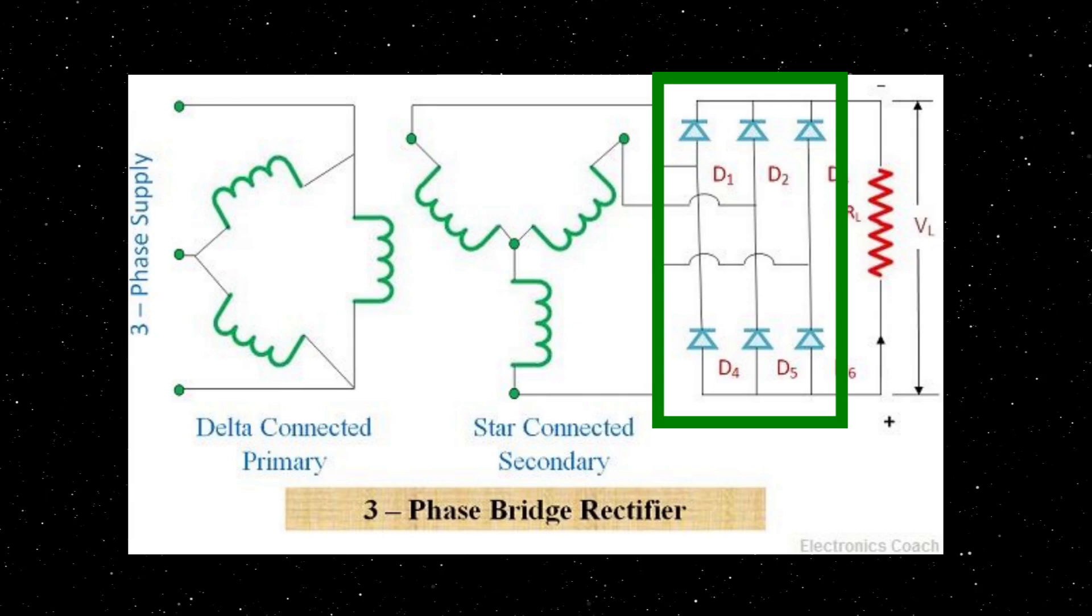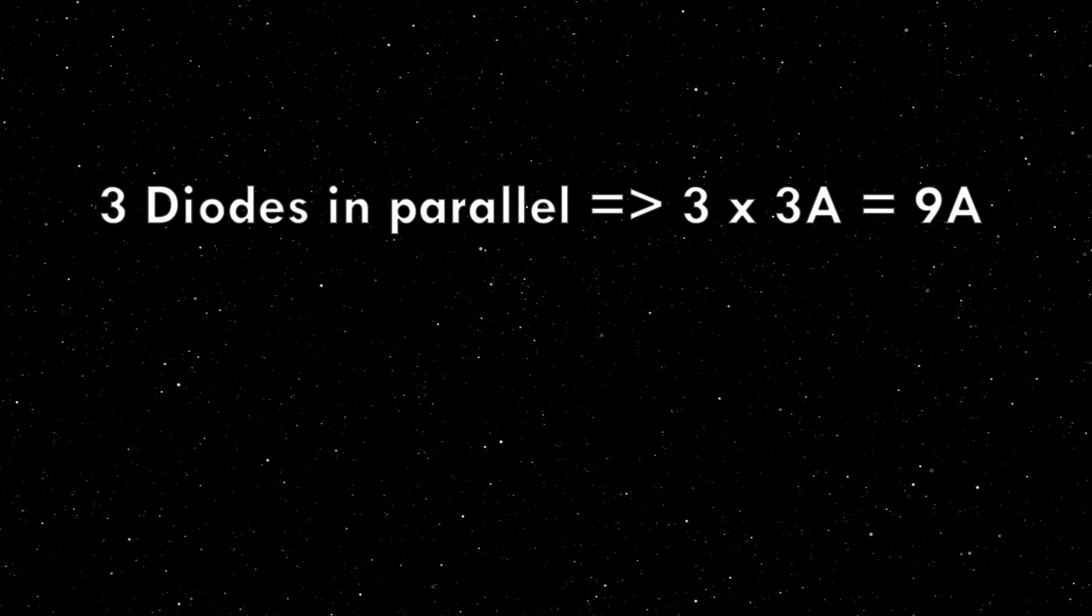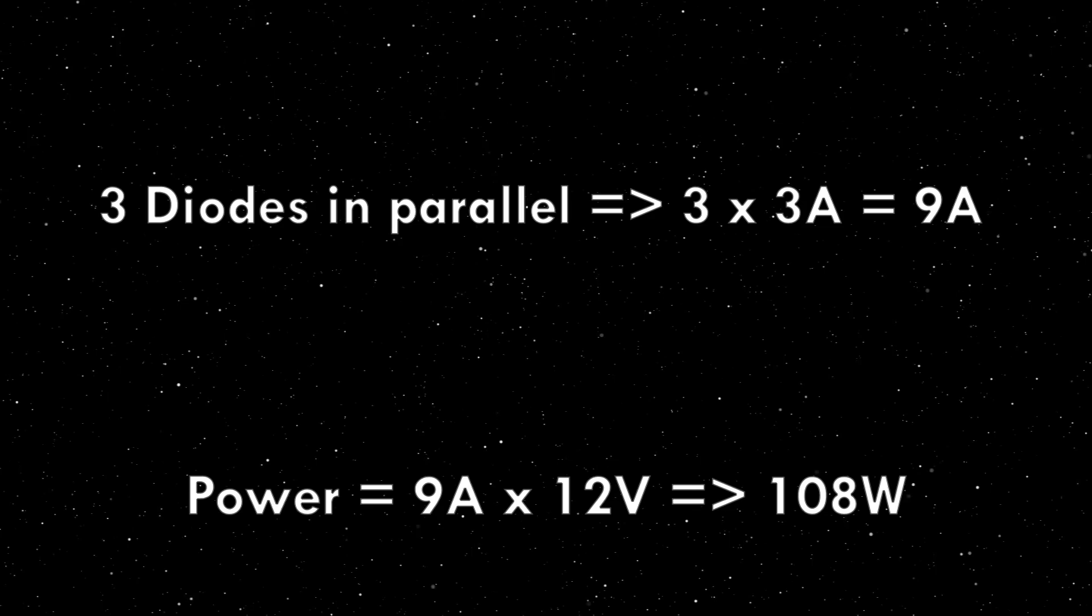All rectifiers are essentially a diode bridge which is shown in this diagram. I also pulled up the datasheet of these diodes. Surprisingly, they are good for 3 amps each. Combine them together and we get 108 watts of power this bridge rectifier can handle.